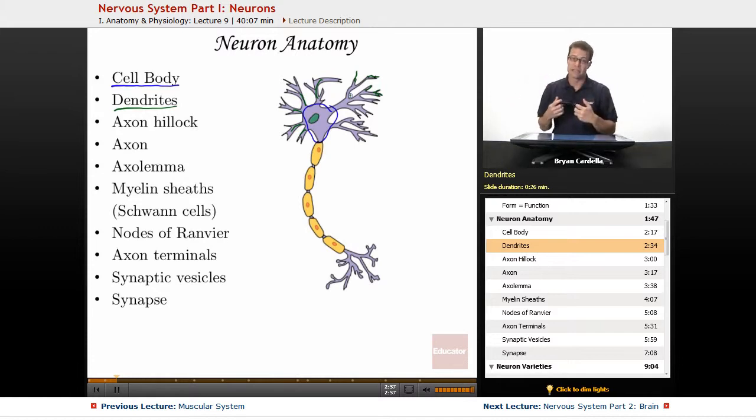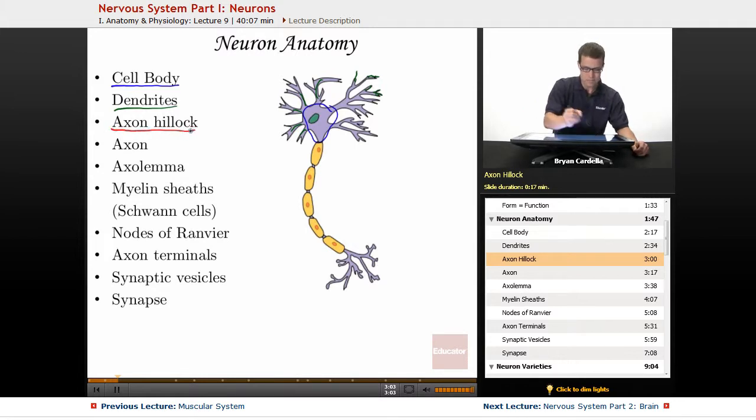The axon hillock is basically the connecting portion between the cell body of the neuron and the axon, which is coming up in a bit. So right here, that's a thickened portion that connects the cell body and axon.